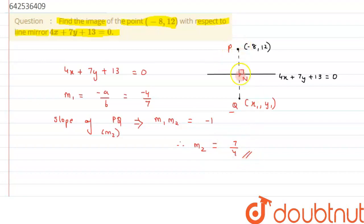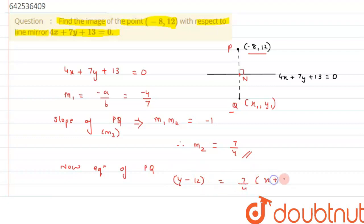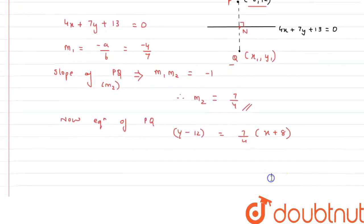Alright, so now we have the slope of PQ. We also have the points, so what we can do is calculate the equation of line PQ. By slope-point form, that is: y minus 12 equals 7 by 4 times x minus (negative 8), which becomes x plus 8. After solving this, we get 4y minus 48 equals 7x plus 56.